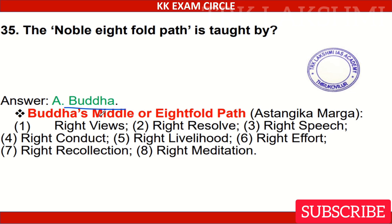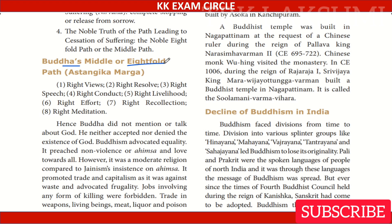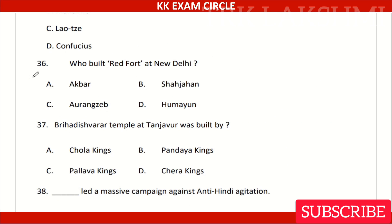Answer: Option A, Buddha. Buddha's Eightfold Path consists of: Right Views, Right Resolve, Right Speech, Right Conduct, Right Livelihood, Right Effort, Right Recollection, and Right Meditation.